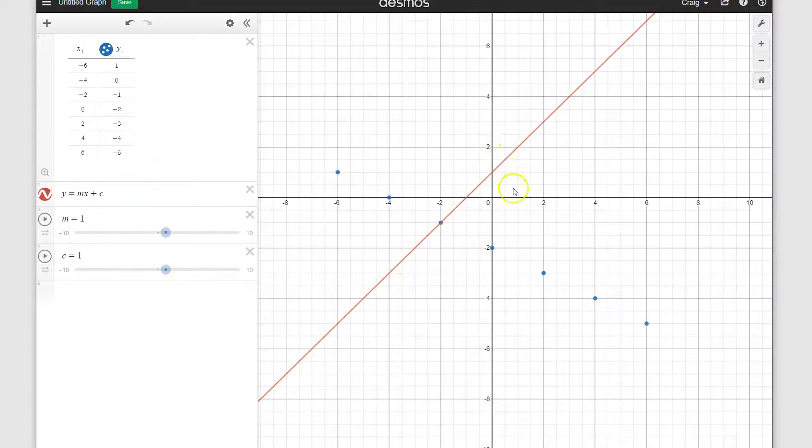All right. Now the next challenge is we want to get this red line to lie on top of all of these dots. First thing I'm going to do is look at the y-intercept of the line. And at the moment, it's at (0, 1). What we want to do is move it down to this point here, (0, -2). The way in which we're going to do that is we go to the value of c, and we start either increasing it if this dot is above the line, or we decrease it if it's below the line. In this case, it's below.